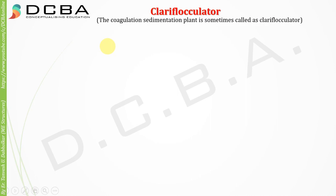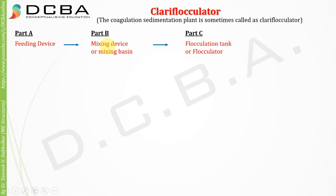The coagulation sedimentation plant is sometimes called a clariflocculator. It has 4 parts: Part A is the feeding device, Part B is the mixing device, Part C is the flocculation tank or flocculator, and Part D is the settling tank or sedimentation tank.